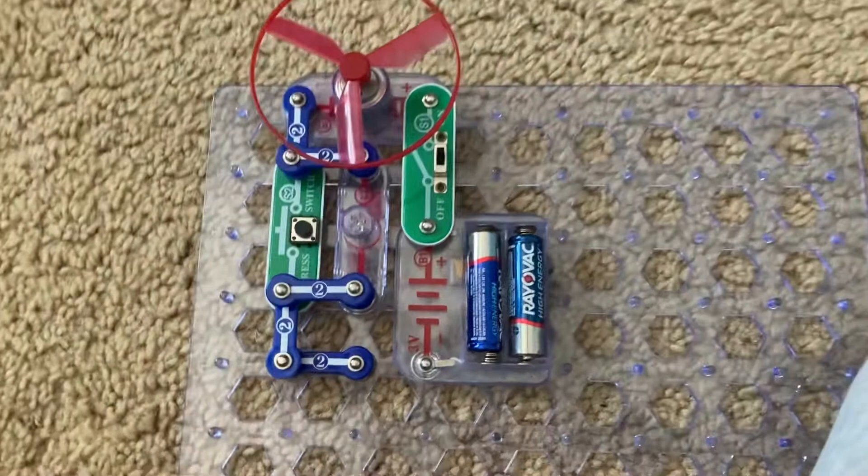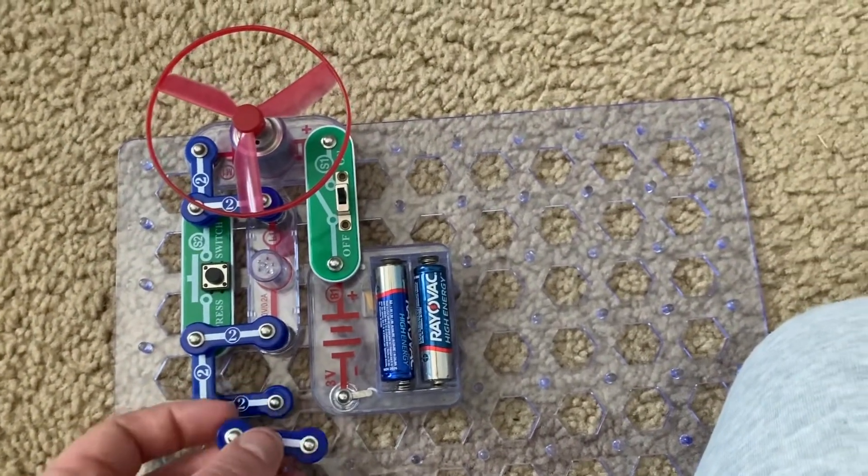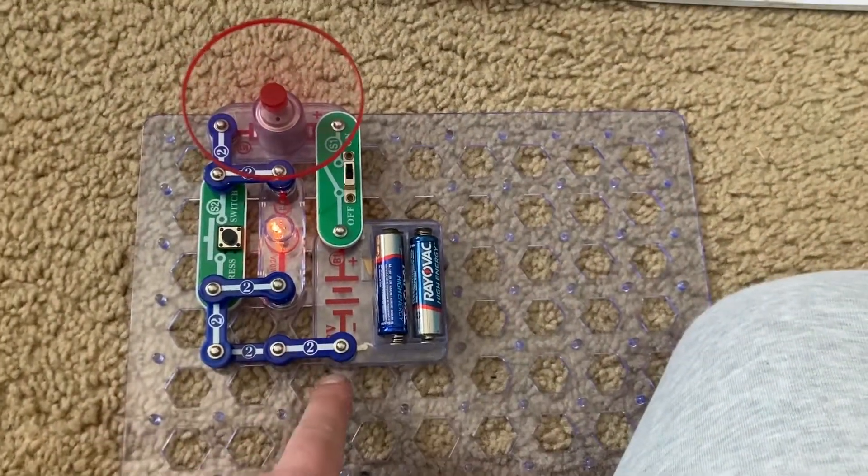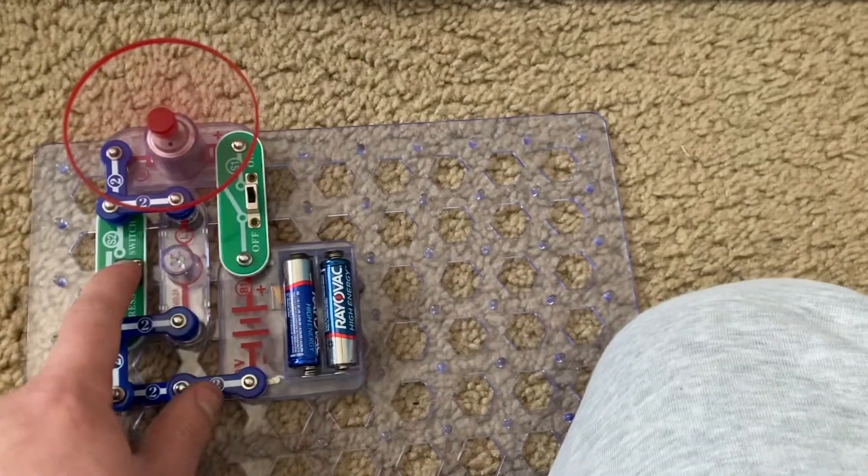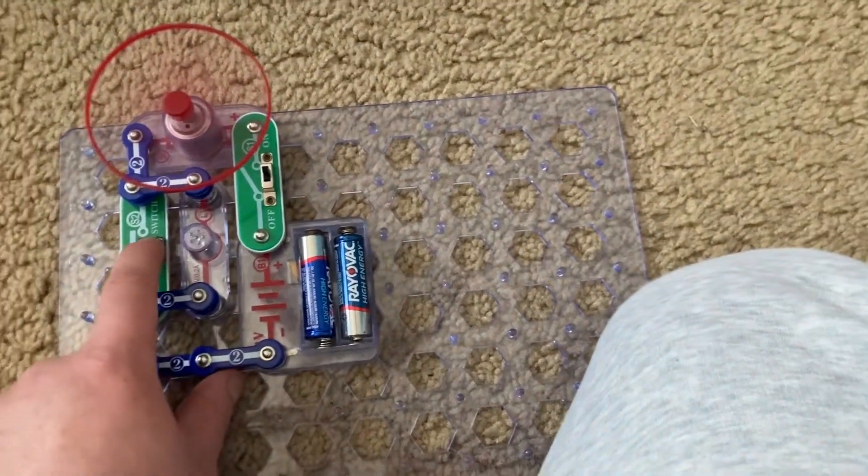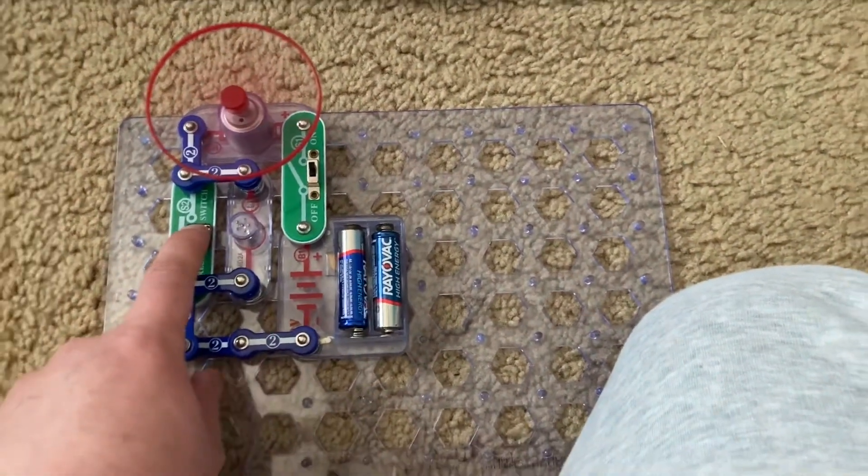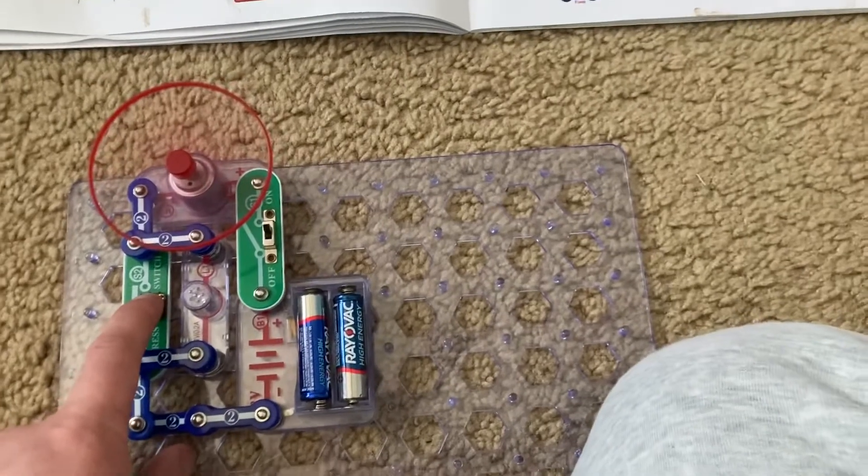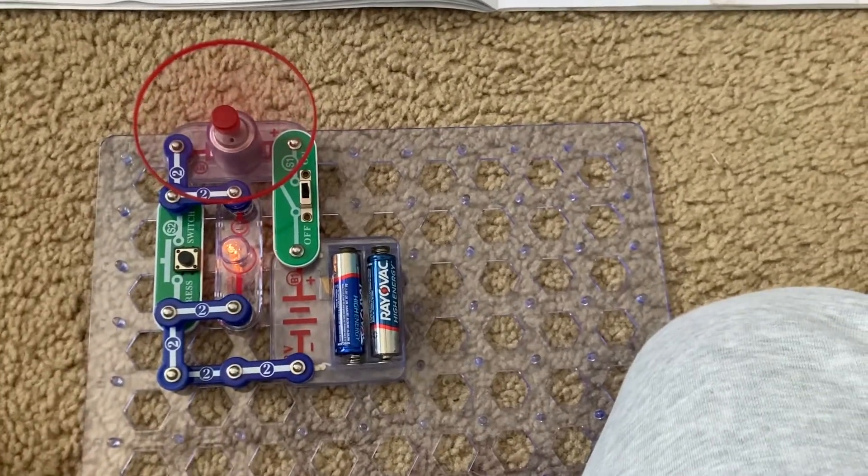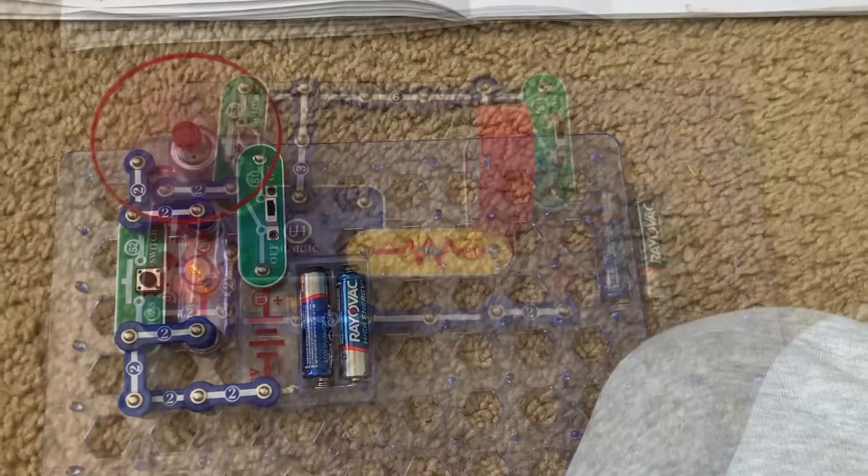And then you can reset the fuse by putting the two-snap wire back in place, and the circuit is functional again. In the same way, you can reset real-life fuses so that your components work again once you solve whatever problem they may have, and the fuse no longer detects anything that is not right.